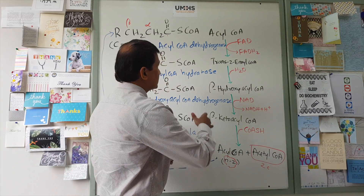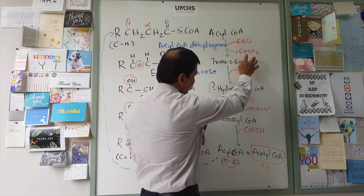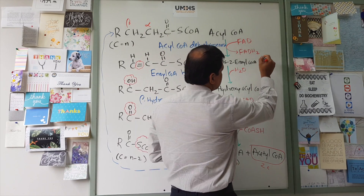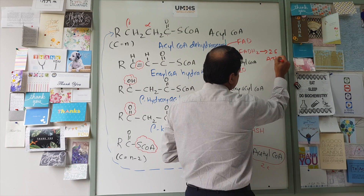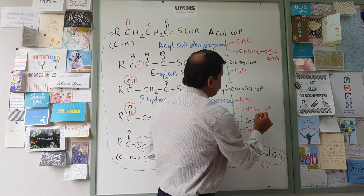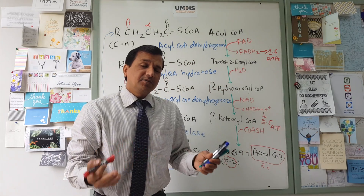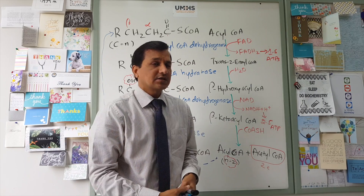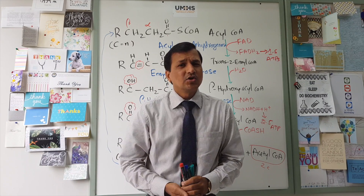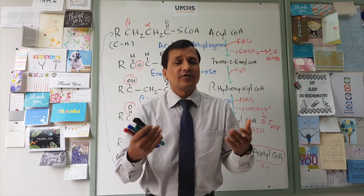In each spiral — reactions 1 through 4 — there is release of 1 FADH2 and 1 NADH + H⁺. FADH2 entering the electron transport chain is worth 1.5 ATPs, while NADH + H⁺ is worth 2.5 ATPs, giving 4 ATPs per spiral, plus one acetyl-CoA molecule. Using this, we can calculate total ATPs from each fatty acid.